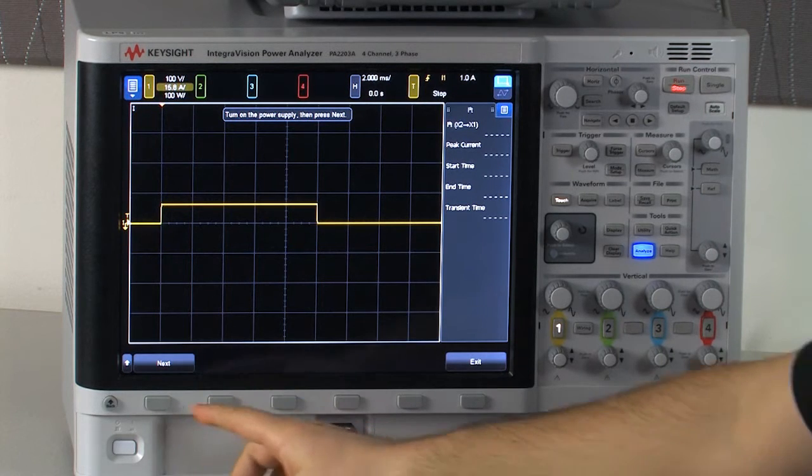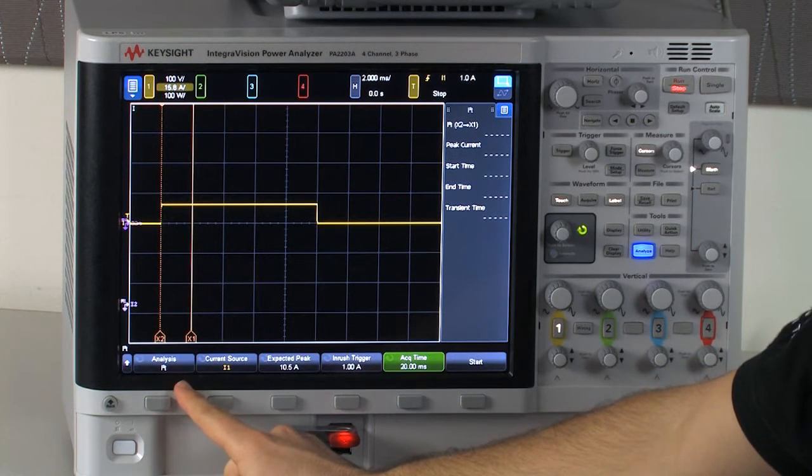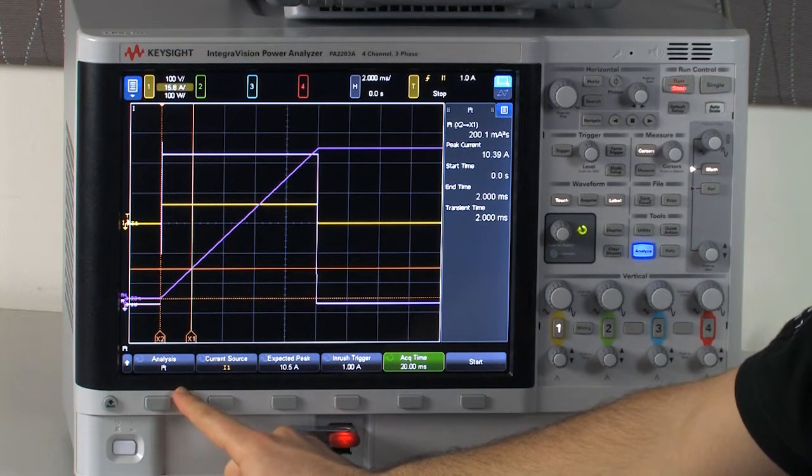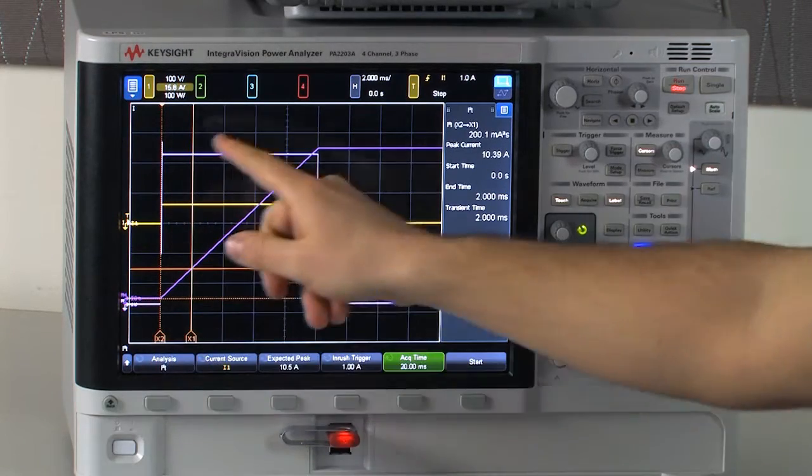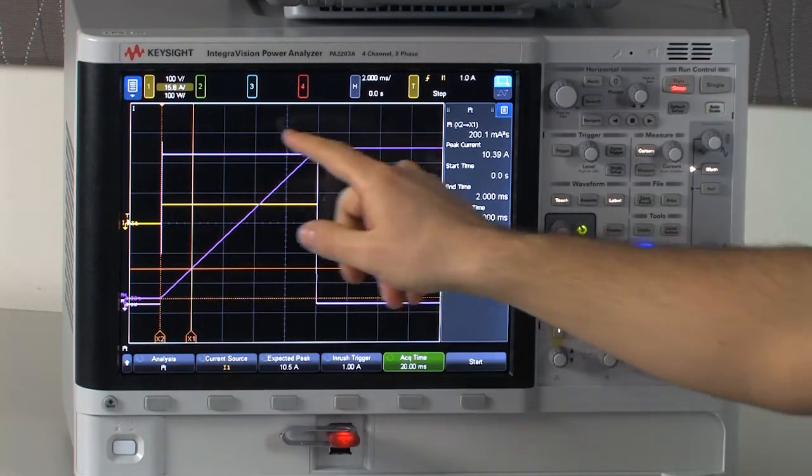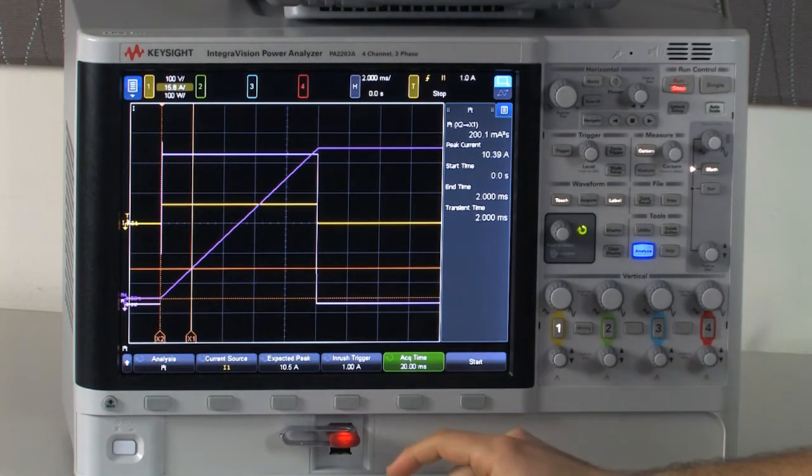And you see that we've captured it. Clicking next after that, two math waveforms come up. The lighter pink trace is the I squared, and you can see it's just a larger value of the inrush current.